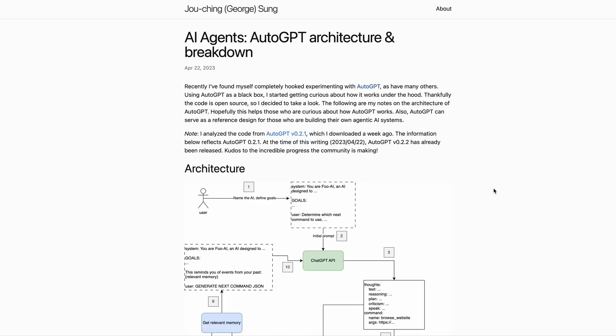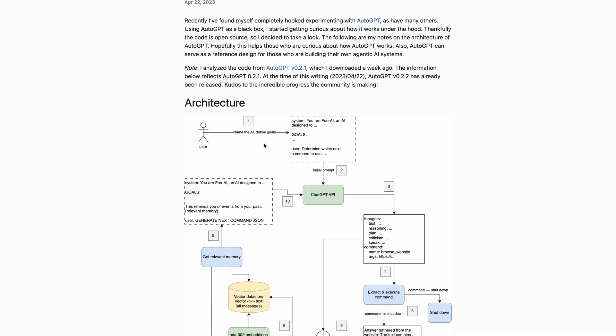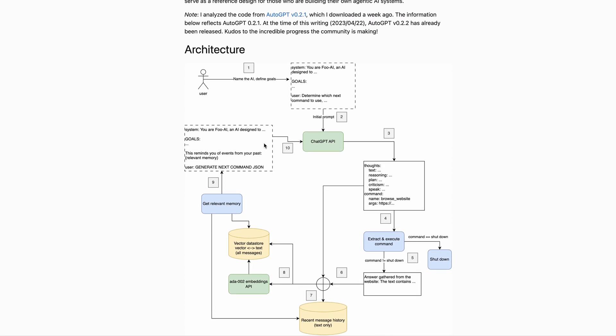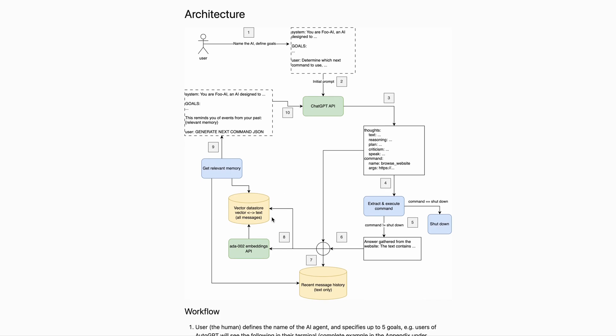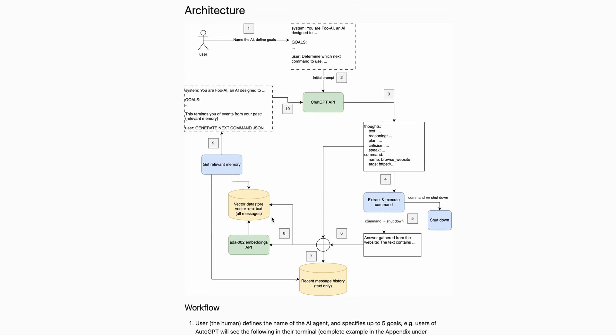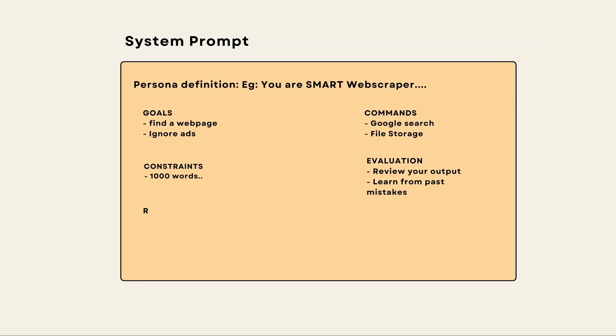AutoGPT was one of the first open source autonomous AI agents, and the architecture is built on top of React prompting. A person named George Song took the pain of going through the code base of AutoGPT to understand the architecture and wrote a nice article about it. The architecture is slightly technical and a bit hard to understand, but don't worry, I'm going to try and simplify the architecture for you to understand it better. In case of AutoGPT, they have an elaborate system prompt that defines the persona, plus it also defines these six entities.